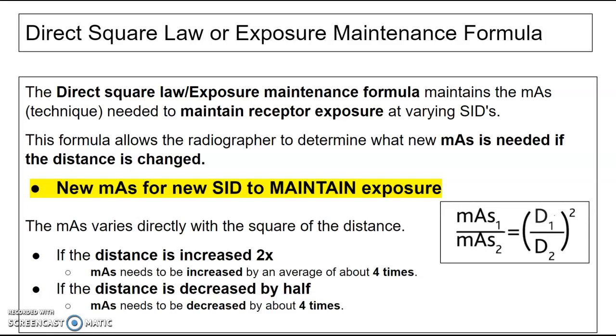And one of the cheaters for me that I use, so if the distance is increased about two times, because we use 40 inches and 72 inches, we don't use 40 and 80. So I use about four times more. So if I increase from 40 to 72, I simply multiply my mAs by four.